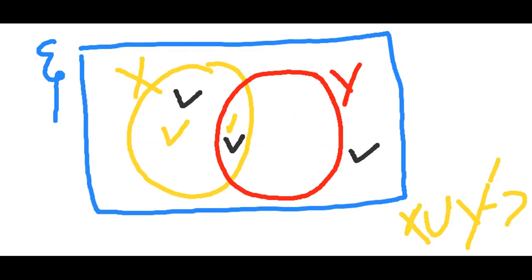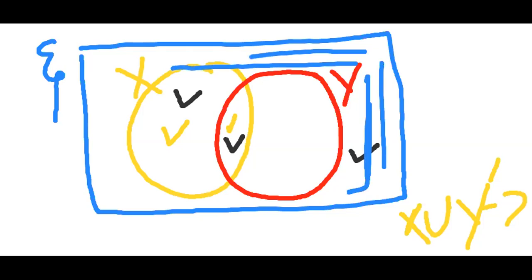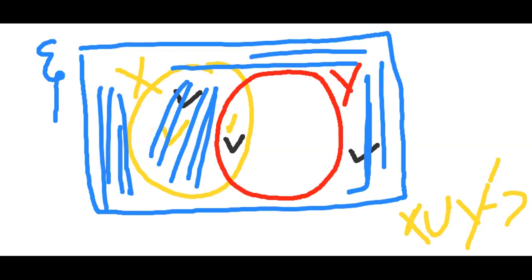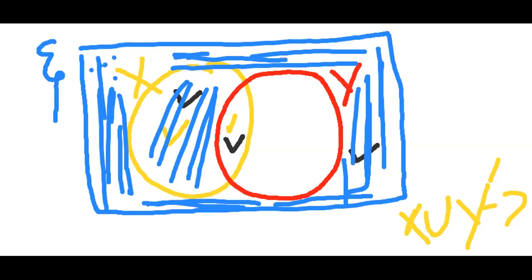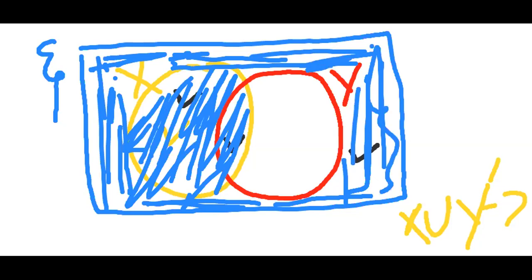Now I am shading all the corresponding portions using blue lines. This whole portion and this one — shaded with blue lines — represent X union Y complement. We are excluding only the part that belongs solely to Y. That excluded part is Y complement's boundary; everything else shaded is X union Y complement.